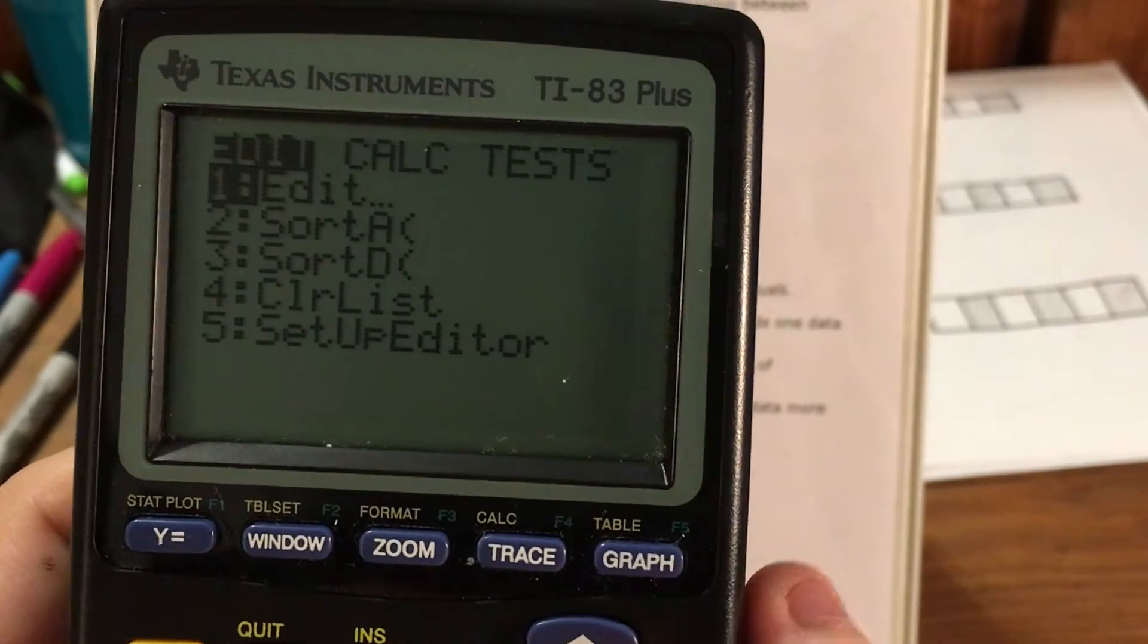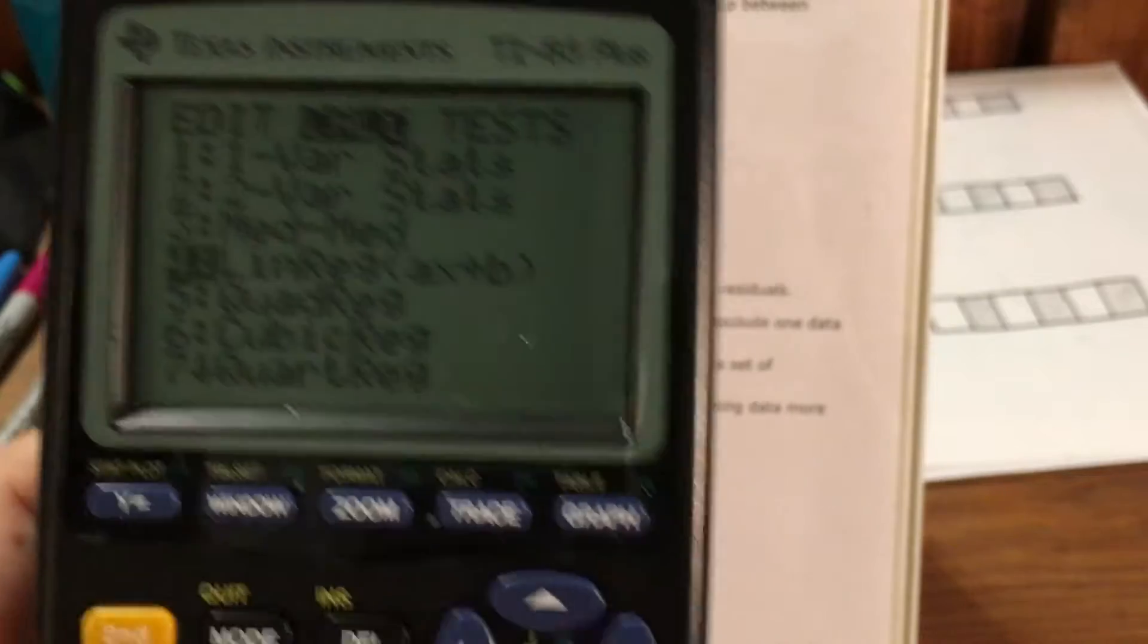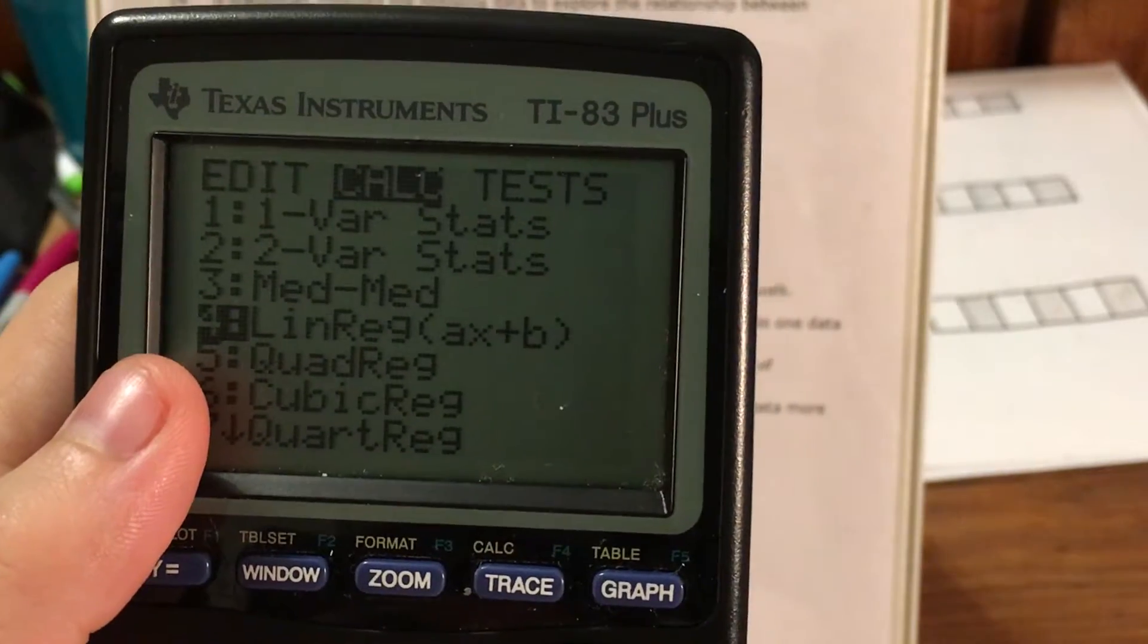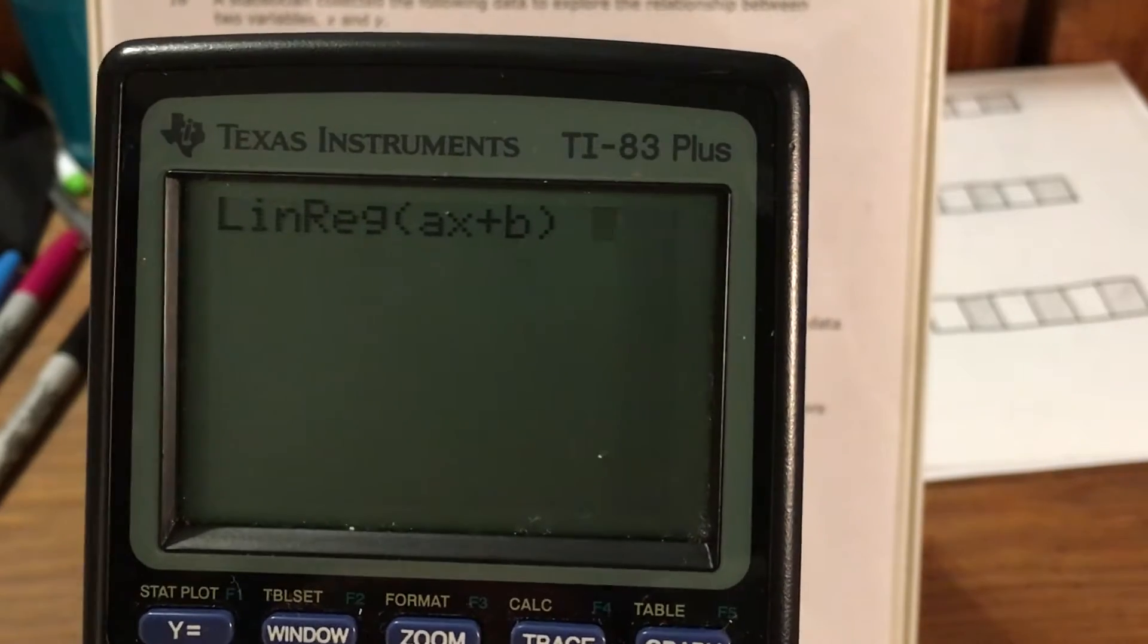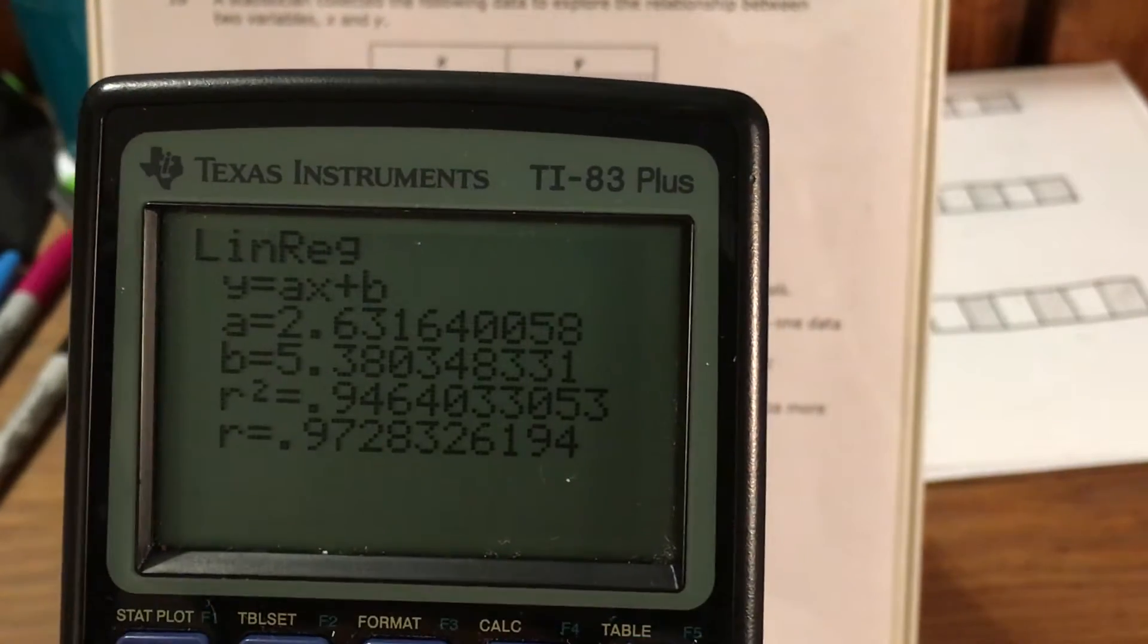And now I can go back to stat. Go to my calc menu and find this command here that says linear regression ax plus b. I press enter on that. It gets me back to the main screen. Press enter one more time.